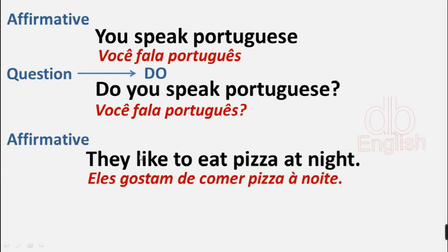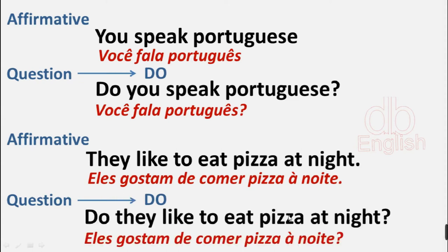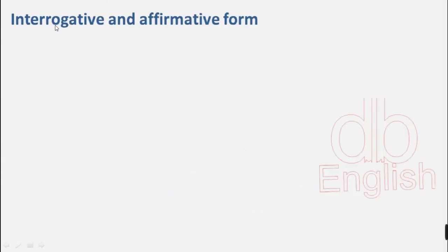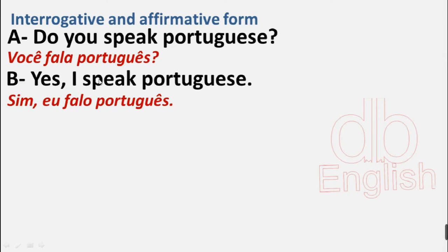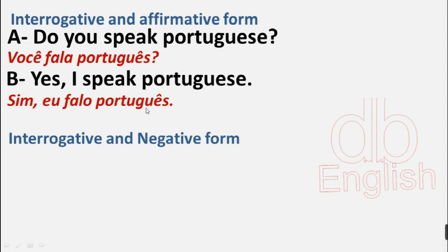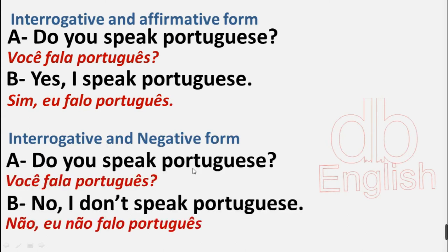Affirmative: they like to eat pizza at night. To ask a question using 'do': do they like to eat pizza at night? Interrogative and affirmative form: Do you speak Portuguese? Yes, I speak Portuguese. Interrogative and negative form: Do you speak Portuguese? No, I don't speak Portuguese. To answer negatively, you have to use 'don't'.